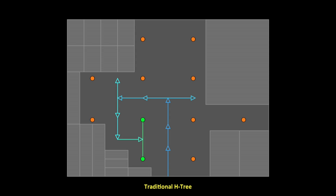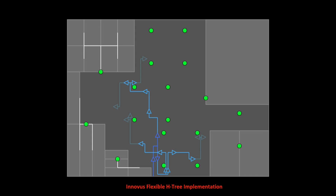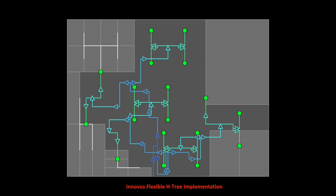Innovus implementation system includes a flexible H-tree feature. It has an advanced heuristic search which trades off millions of structures to give an intelligent trade-off between skew, power, area, insertion delay, avoiding blockages such as macros and power rails, and sticking to partition and module boundaries. It also clones logic, auto-generating a clock spec for either balancing or for full CCOP.